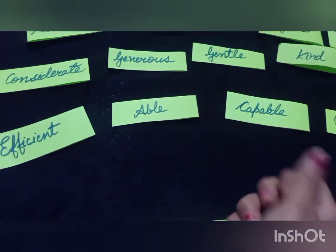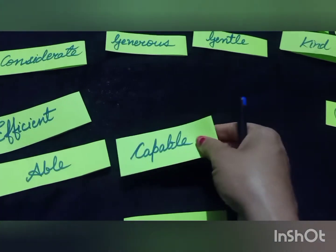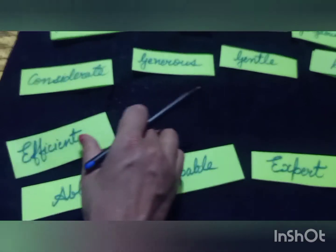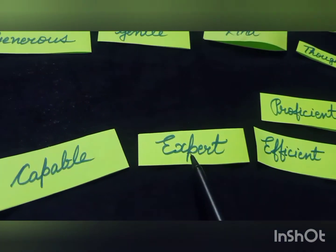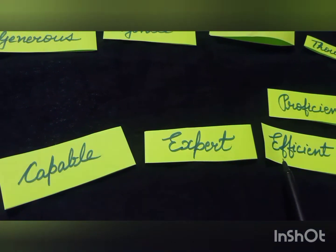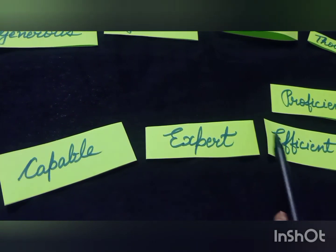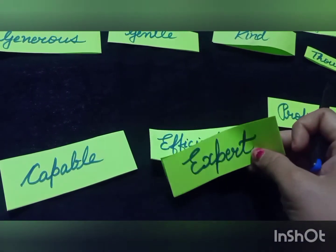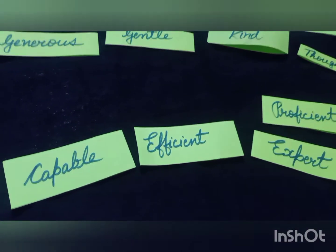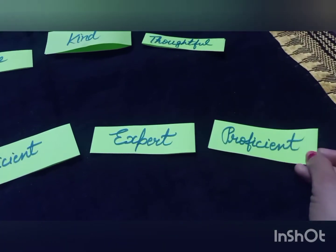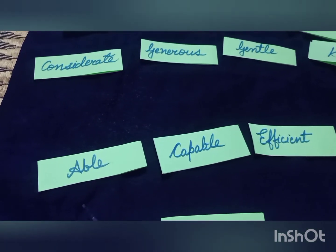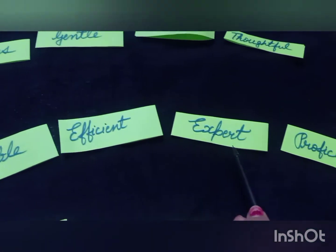For efficient's synonyms — able, capable, efficient, expert, proficient. Is there any word starting with A? Yes — able. Starting with C? Yes — capable. Starting with E? Yes — we have two words: efficient and expert. The second letter of efficient is F and of expert is X. Since F comes before X, efficient comes before expert. The remaining word is proficient. The correct alphabetical order is: able, capable, efficient, expert, proficient.